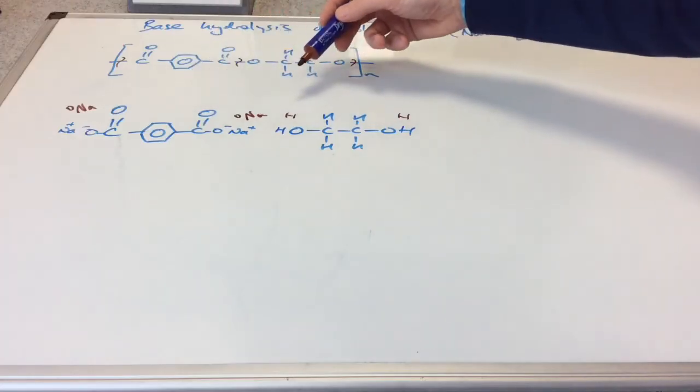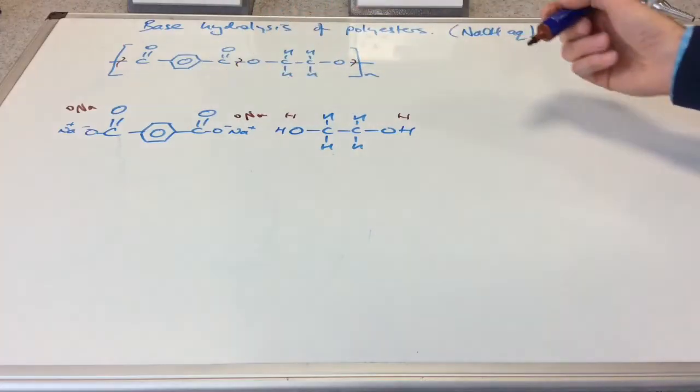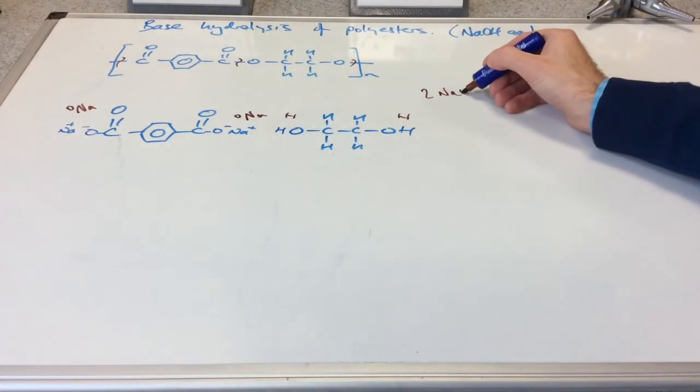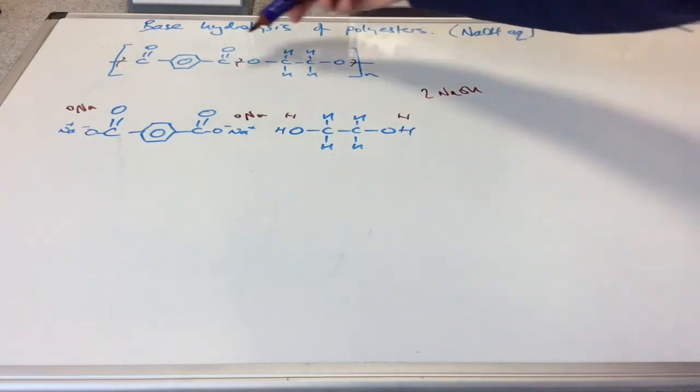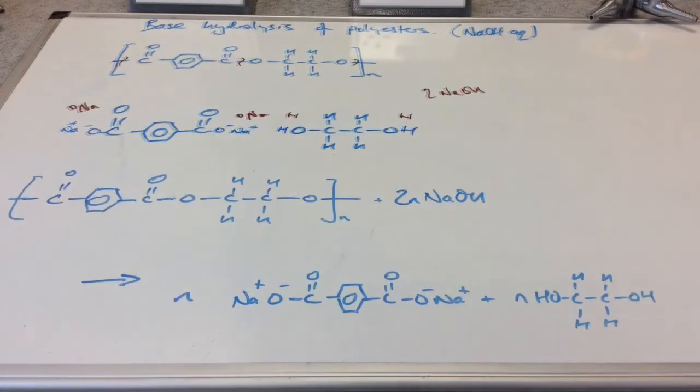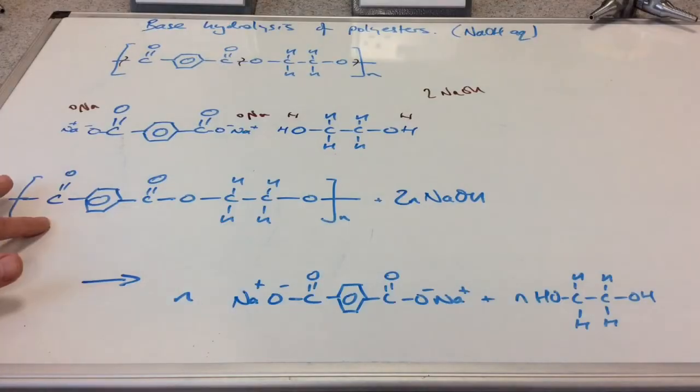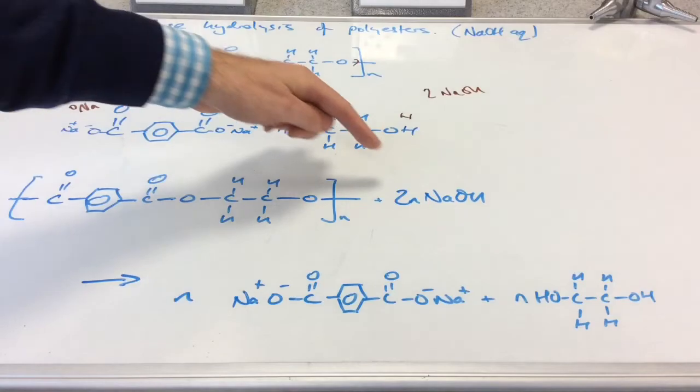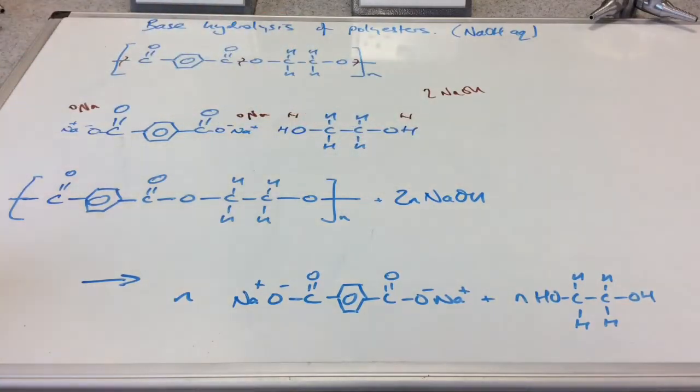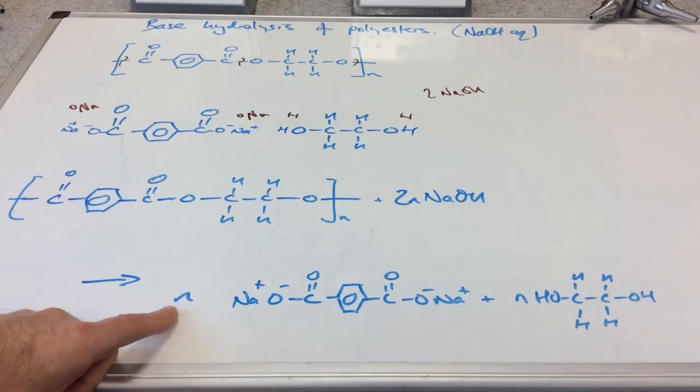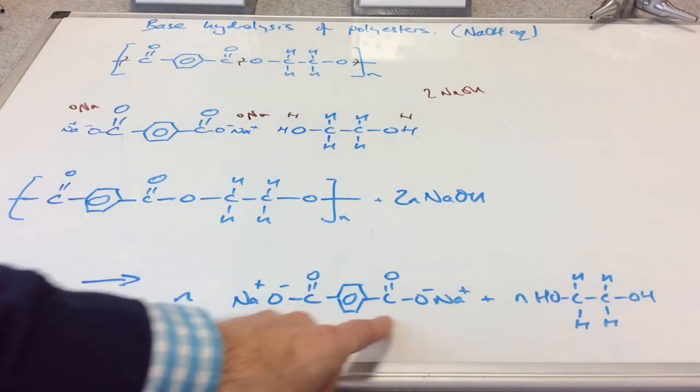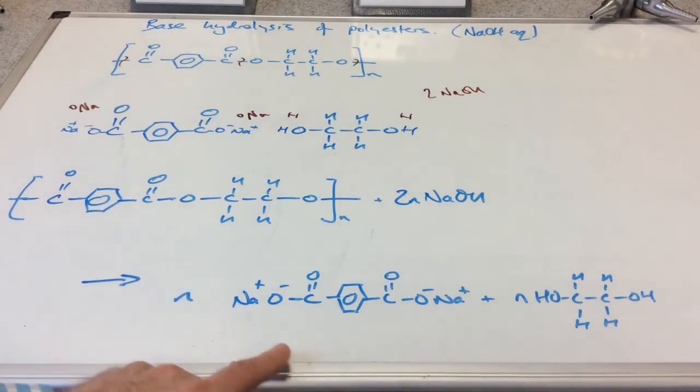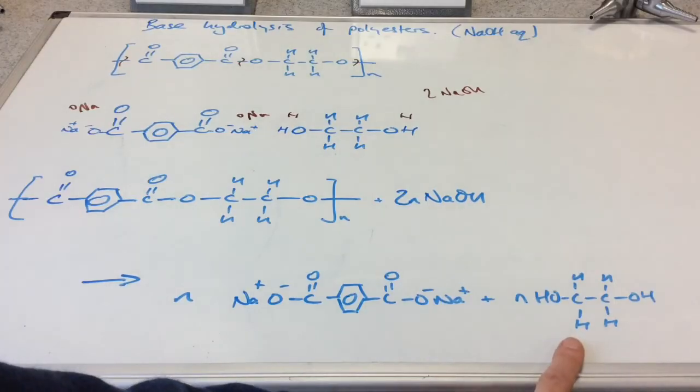You can hopefully see that we've got two lots of NaOH required per repeat unit. So there's your overall equation. We've got N moles of the polymer terylene. Requires two N moles of sodium hydroxide. And we're making N moles of this dicarboxylate salt and N moles of the diol.